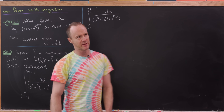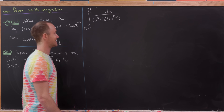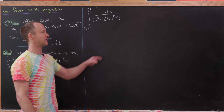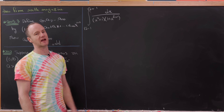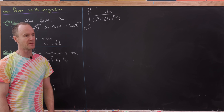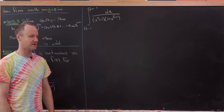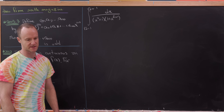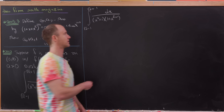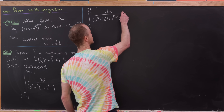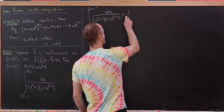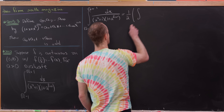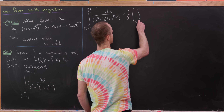You know there's going to be a trick, because having a function in the exponent could make this really complicated otherwise. And in fact there is one. We're going to start by taking one half of the integral added to itself.